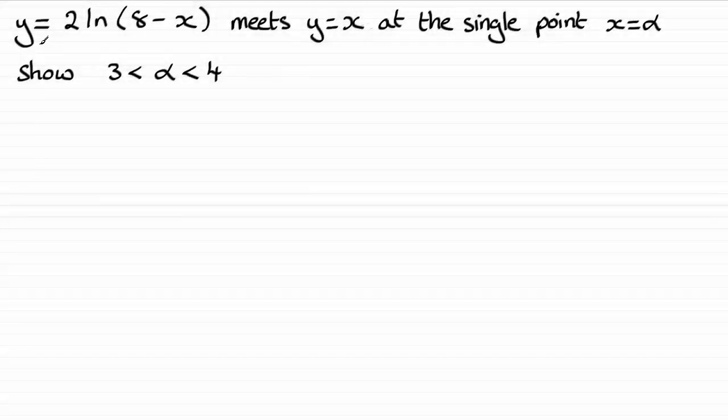For this question, we're given the curve with equation y equals 2 times the natural log of 8 minus x, and it meets the straight line y equals x at the single point x equals alpha. We're asked to show that alpha lies between 3 and 4.